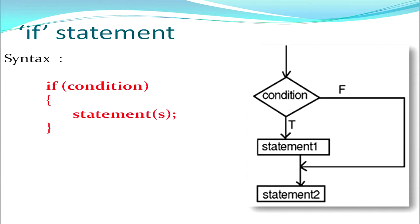First and foremost, we have the if statement — the simplest of the conditional statements. The syntax and flowchart are shown here. In the decision box we give the condition. Any condition we give can have only two results: either it will be true or it will be false — there is no other possibility. For example, if I say 'is the number greater than 10,' the answer can only be yes or no, true or false.